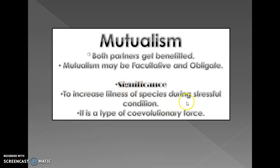The significance of mutualism is to increase the fitness of species during stressful conditions. It is also a type of co-evolutionary force — both species are in co-evolutionary phase. Types of mutualism include dispersive, defensive, and resource-based. Examples include bacteria and protists, microbial species in the digestive system, mycorrhiza, relationship between humans and crops, the yucca and pronuba moth relationship, lichens, and pollination in orchids by colpa wasps.